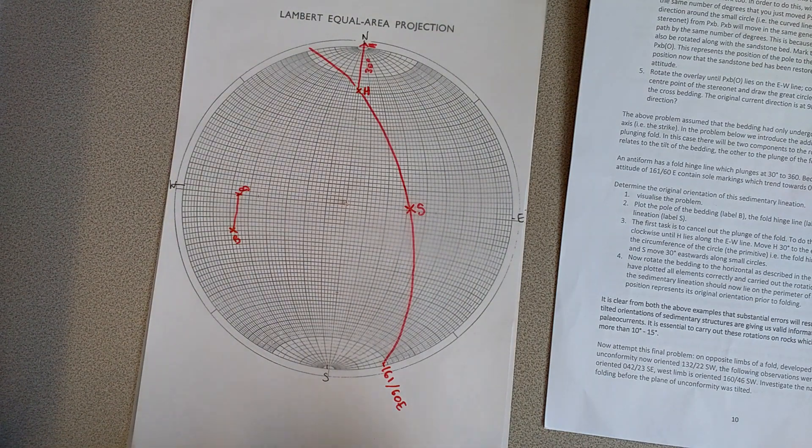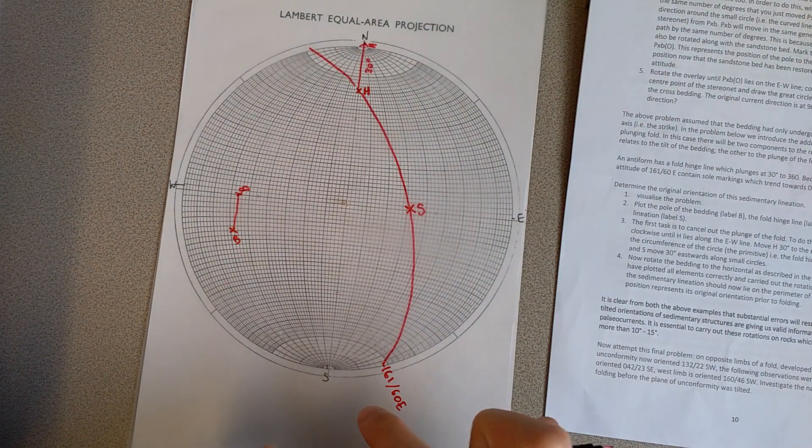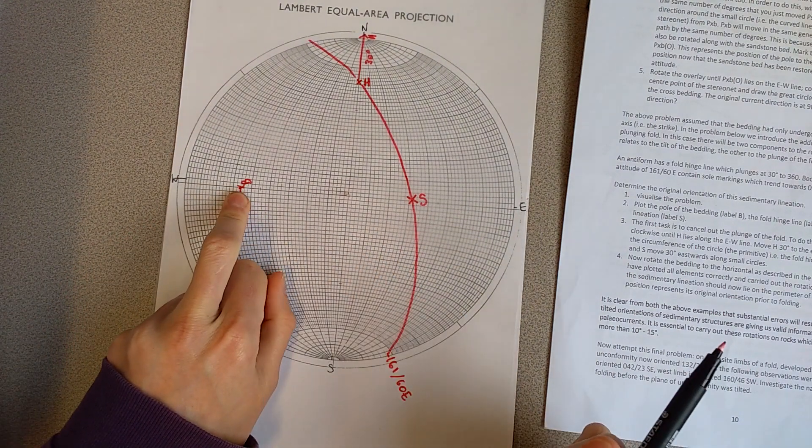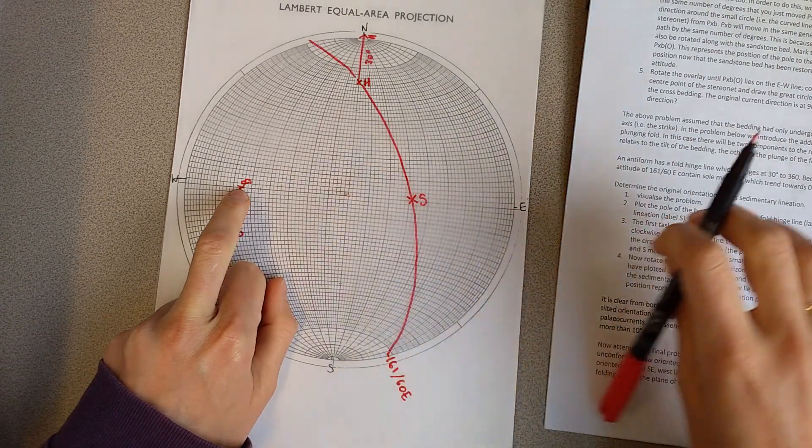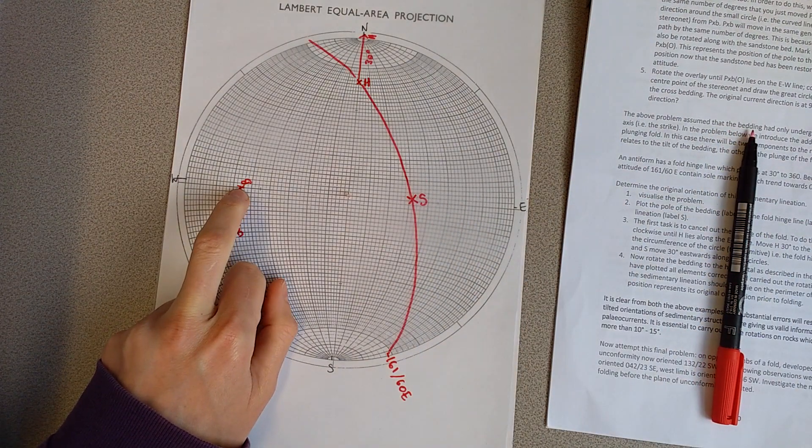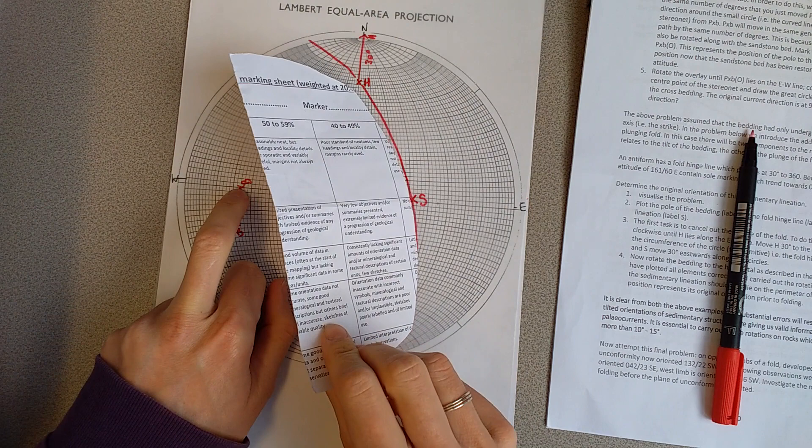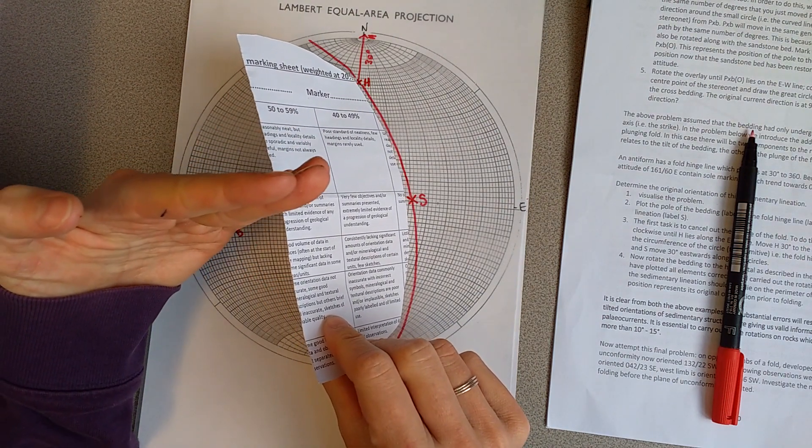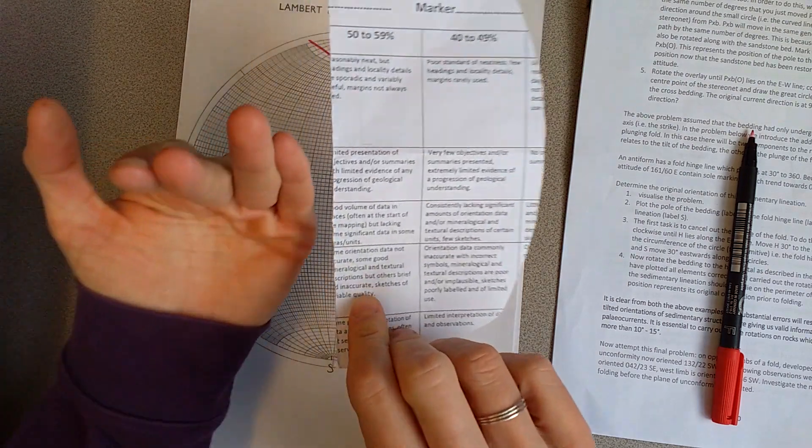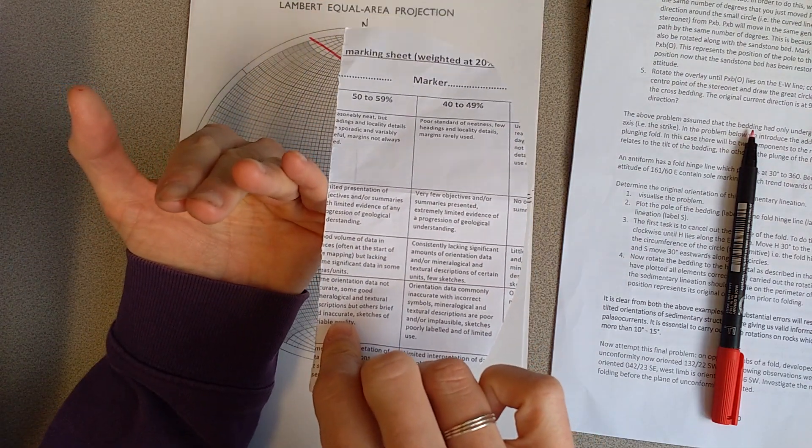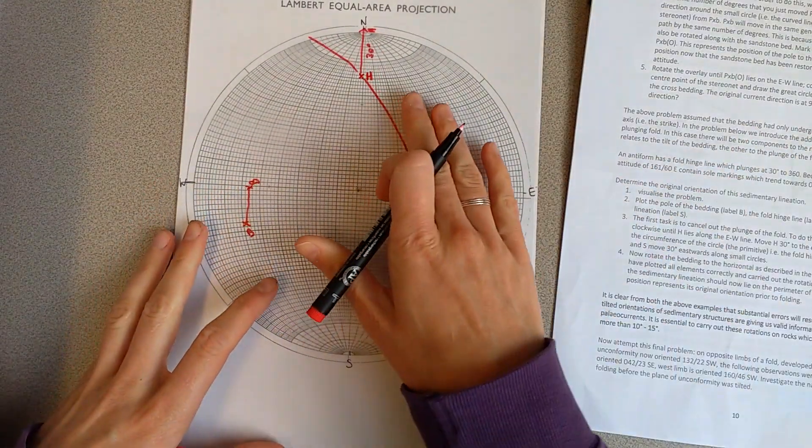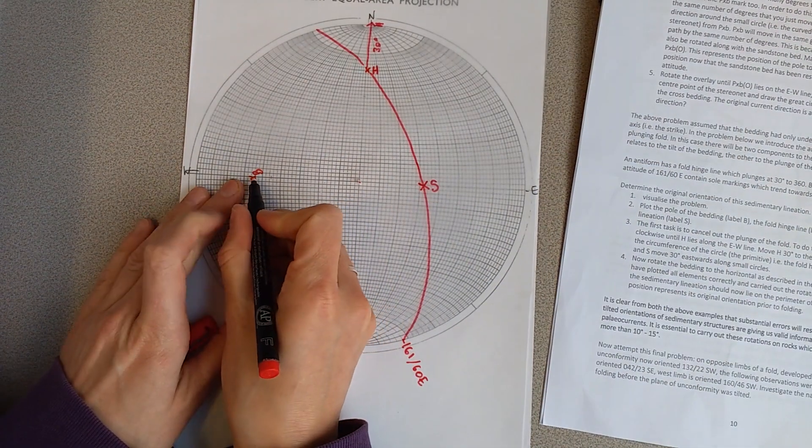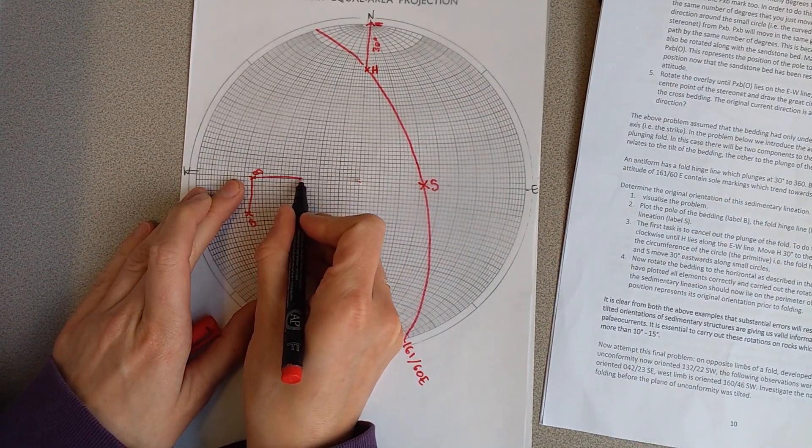And then what we want to do is we want to unfold it completely. So we're going to now rotate the bedding so it is also horizontal. So we're going to do exactly the same thing. So remember this point here is the pole to our bed. So at the moment our bed is kind of tilted down like that, and our pole is at 90 degrees. If we rotate our pole to the middle, then our bedding will be flat. So we're going to do exactly the same thing. So with the bedding on the east-west line, we're going to move it in to the centre.